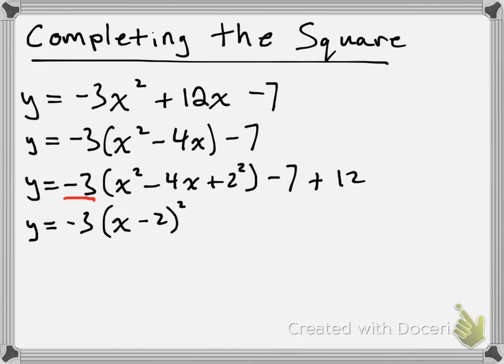And then I have -7 + 12, and that simplifies into +5. So now, this is in vertex form, so I just completed the square to put it into vertex form.